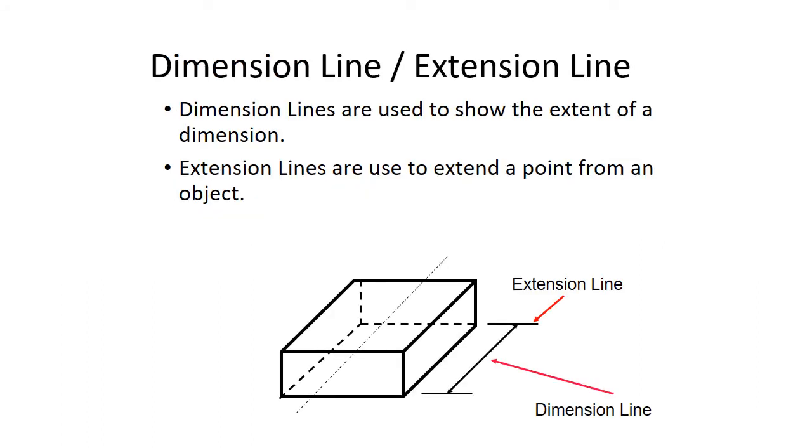Here's another picture of dimension lines and extension lines. Dimension lines are used to show the extent of a dimension. How big is something? Is it 3 feet or 6 inches or 6 millimeters? Extension lines are used to extend a point from an object. We just bring that line of the edge of a block or something. We bring it out so that then our dimension line we can see, oh, that's where we're at as far as this length.